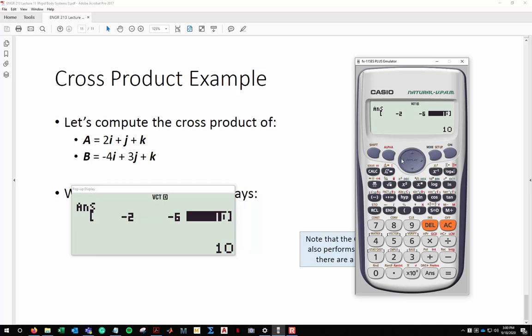We got negative 2i minus 6j plus 10k. So that's another way of doing cross products. It's a little bit more cumbersome if you're doing them a lot, but again, it's a way of checking what you did. That's all.